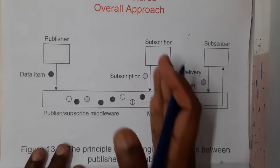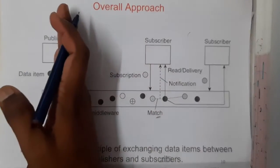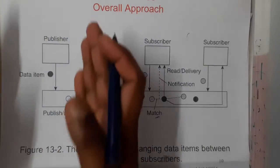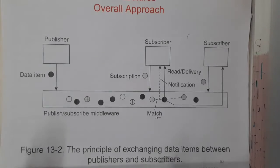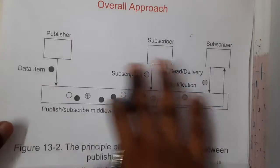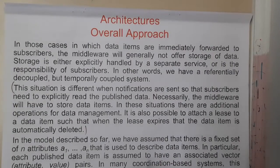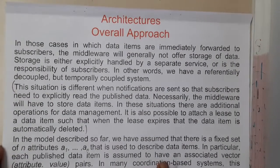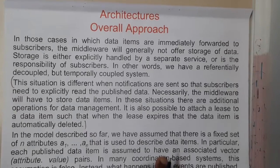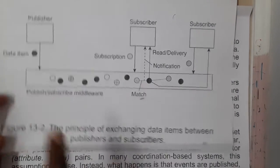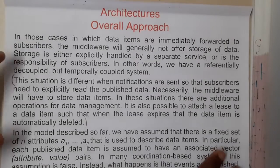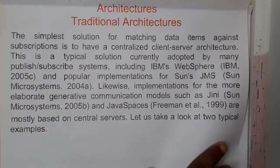We can have multiple subscribers, but for a particular channel we can say only one publisher will be there — there will be multiple subscribers but only one owner of the channel, under one email ID. That is the basic diagram. The middleware will be taking care of all those videos — pushing, storing, and managing them.